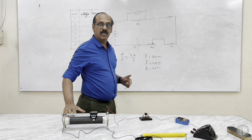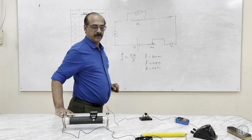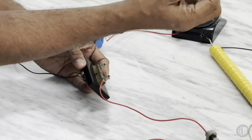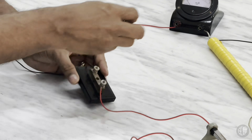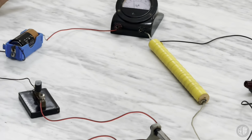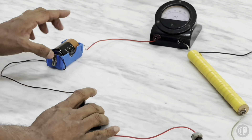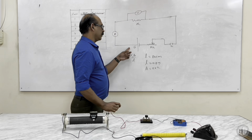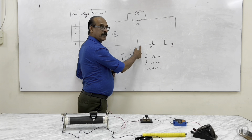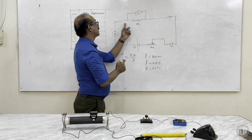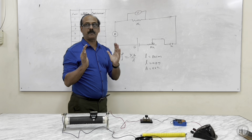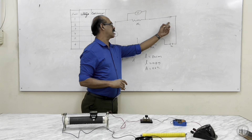Moving the slider one way decreases resistance; the other way increases resistance, thus decreasing the current in the circuit. This is the key — a switch. If open, current will not flow; if closed, current can flow. These are the main components of the apparatus. Now we connect the cell first, making sure we complete the series connection one component after another.